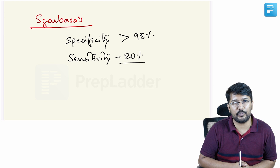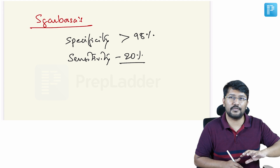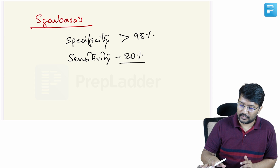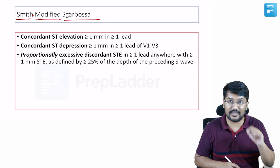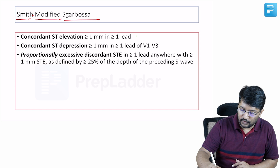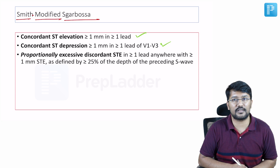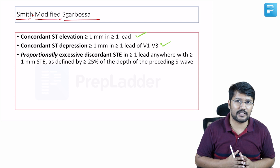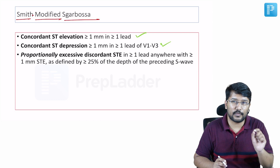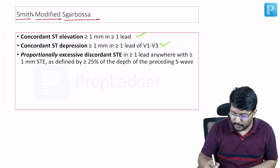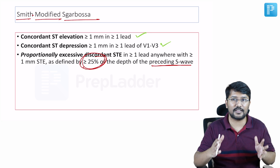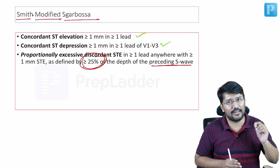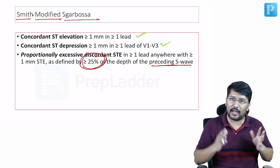To pick up those missed cases and enhance the sensitivity of Sgarbossa's criteria, Dr. Smith modified the criteria. Now we have Smith modified Sgarbossa's criteria, which is what we should apply for all practical purposes. The concordant ST elevation and concordant ST depression components remain the same. The only change is in the third criterion — discordant ST elevation. She introduced the concept of excessively discordant ST elevation: when you see a lead with more than one millimeter discordant ST elevation, look at the amplitude of the S wave in that complex. If the ST elevation is more than 25 percent of the depth of the S wave — for example, if the S wave amplitude is 10 mm, the ST elevation should be more than 2.5 mm — then it is diagnostic of MI. This increases sensitivity significantly.